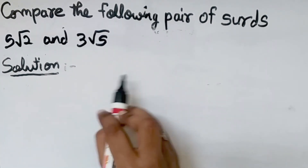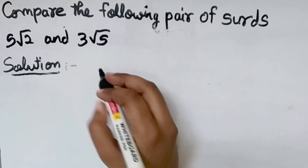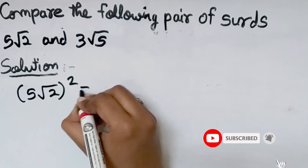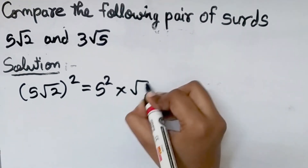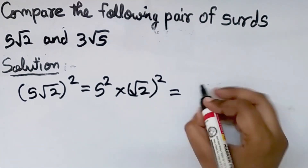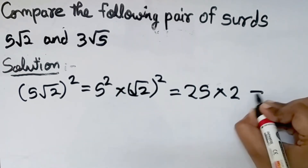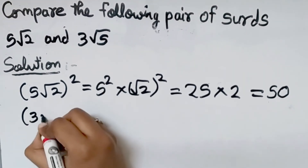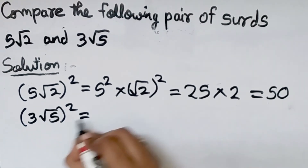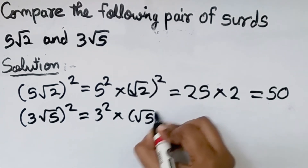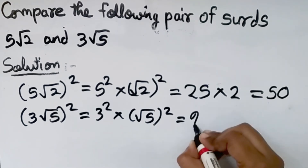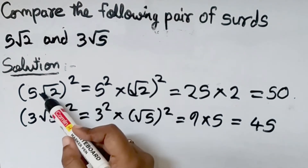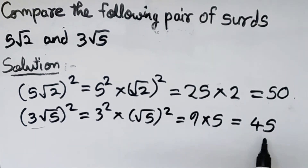Here I am going to use the second method. First I take the square of 5 root 2: 5 squared into root 2 squared equals 25 into 2, which equals 50. Then I take the square of 3 root 5: 3 squared into root 5 squared equals 9 into 5, which equals 45. After squaring we got 50 and 45.